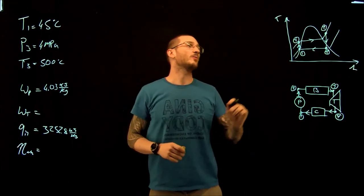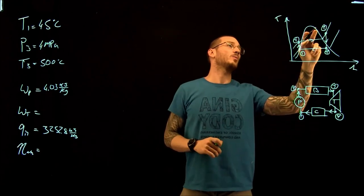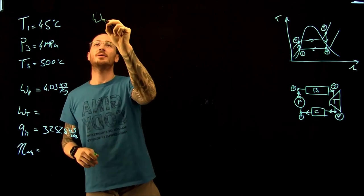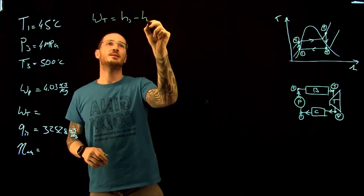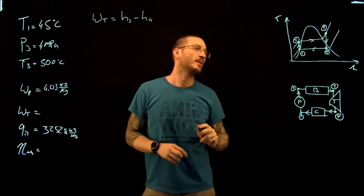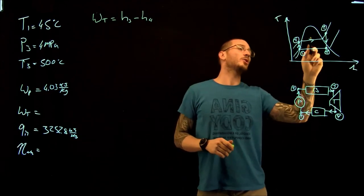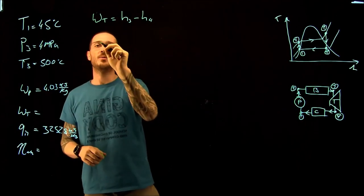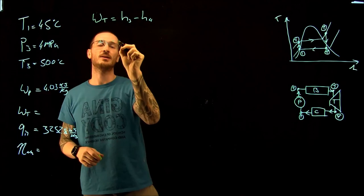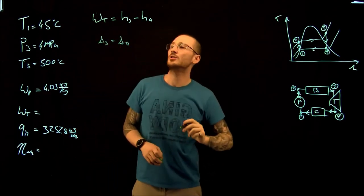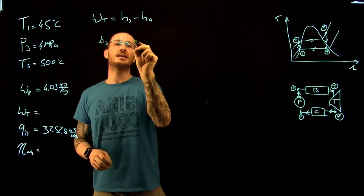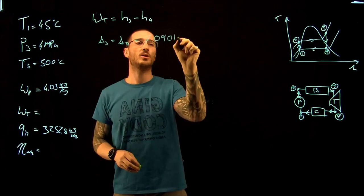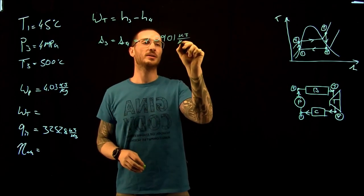Next, the work of the turbine is the enthalpy change from three to four: W_turbine = H₃ − H₄. From the T-S diagram, the process from three to four is isentropic, so the entropy at point three equals the entropy at point four: s₃ = s₄ = 7.0901 kJ/(kg·K), from the superheated vapor tables at 4 MPa and 500°C.